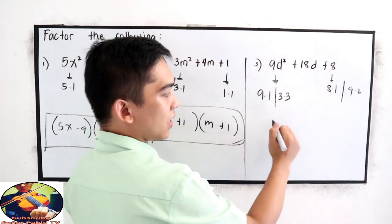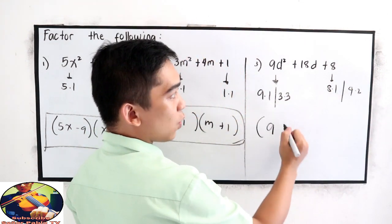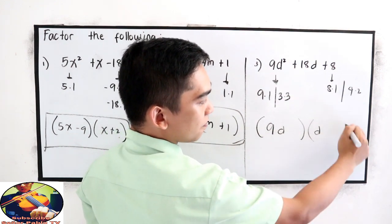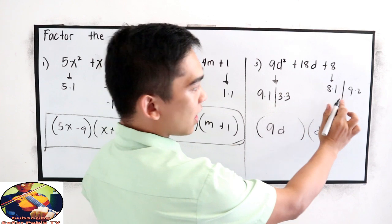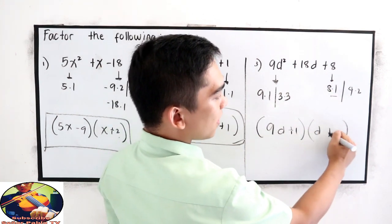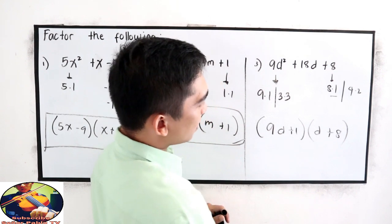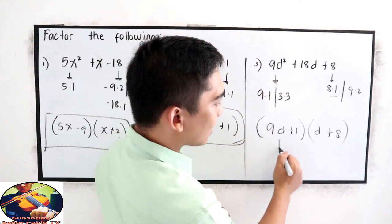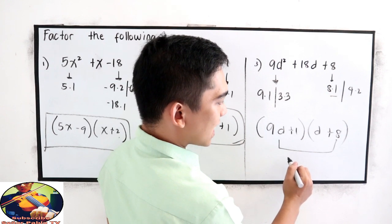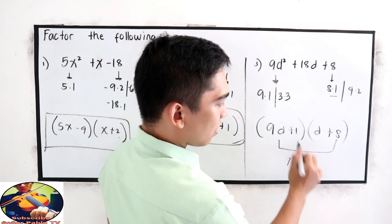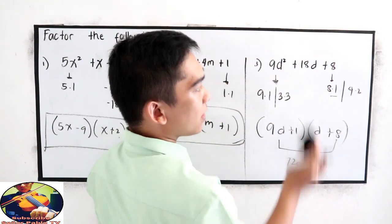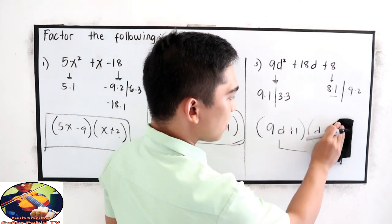Now, let's try 9 and 1 first, so 9d times d. In this case, let's try 8 and 1. So plus 1 plus 8. 9 times 8, that is 72d and 1, this is different from 18.